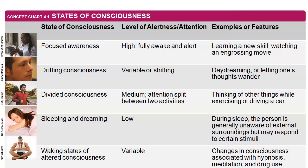On the exam, it'll give you all these different types and you need to find the odd one out. Also focus on divided consciousness — that is when your consciousness is truly divided, split between two different things. Drifting consciousness is when it goes from one thought to another. If you're doing two things at the same time, that's divided consciousness.